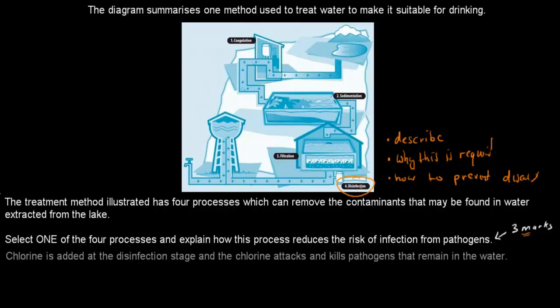So these three are the three marks. So I figured in a variety of tiny bits, go into those different parts and you get your marks. So the first part was: chlorine is added at the disinfection stage, and the chlorine attacks and kills pathogens that remain in the water. That was the first part, just quickly described. That gets your mark.